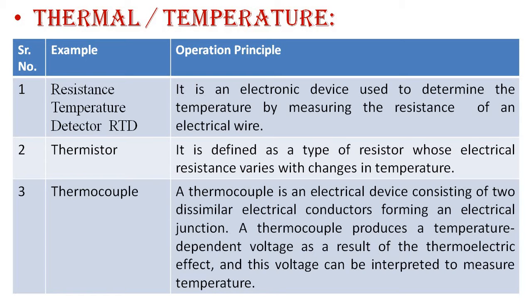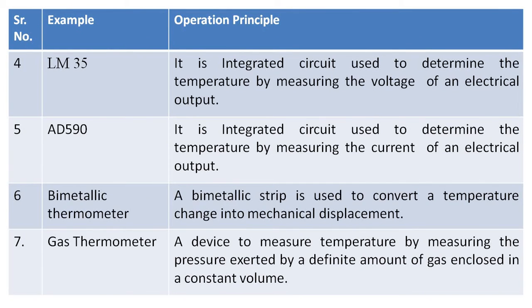This voltage can be interpreted to measure temperature. Next is the LM35 — an integrated circuit used to determine temperature by measuring the voltage of its electrical output. LM35 senses the surrounding or environment temperature and gives an output in terms of voltage, from which you can calculate the temperature. Next is the AD590, also an integrated circuit used to determine the surrounding temperature using its output current, which is converted into a corresponding temperature reading.